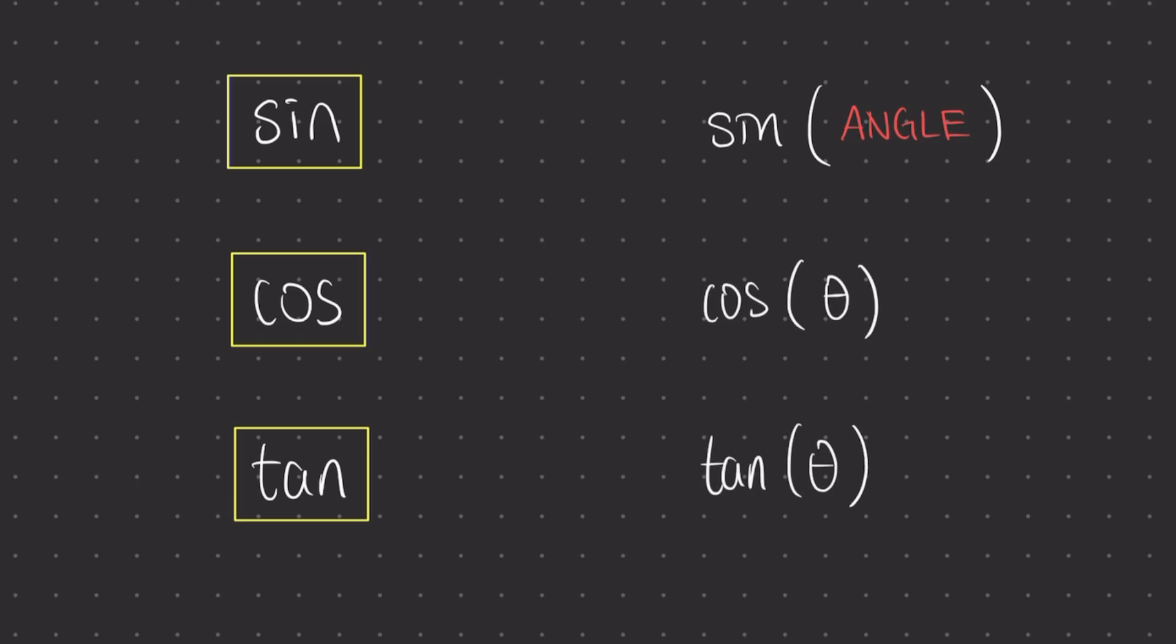Make sure to always close the bracket once you've typed in sine, cos, and tan, because your calculator's not going to know when that input's finished unless you close the bracket. And the final thing you should always make sure is that your calculator is set to degrees mode. There should always be a small capital D at the very top of your calculator screen if you are, in fact, in degrees mode.